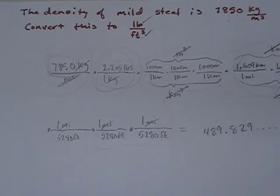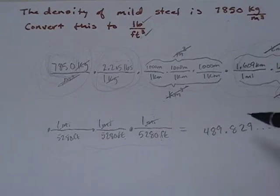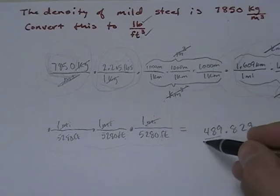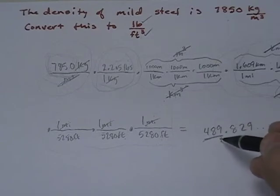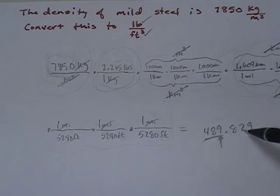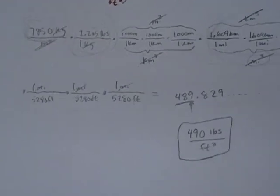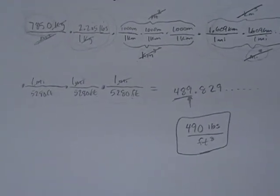I'm going to assume it has three. I'm going to assume the zero is not significant. So 489.829. Round this to three significant digits. And what I'm saying is round it to the nearest whole number. 489.8, round it to the nearest whole number. What do you get? 490. And this will be in pounds per cubic foot. 490 pounds per cubic foot.